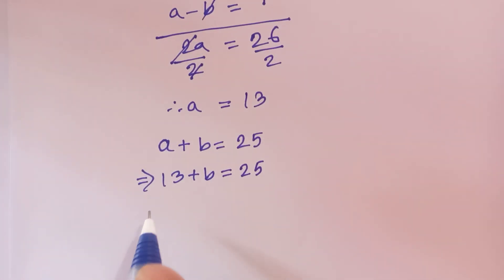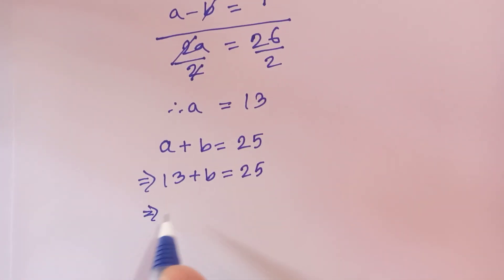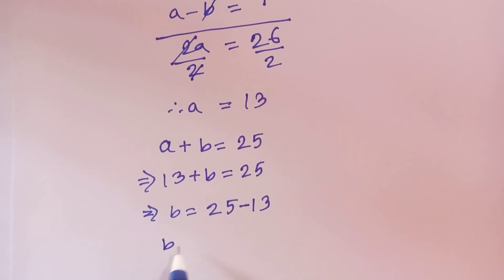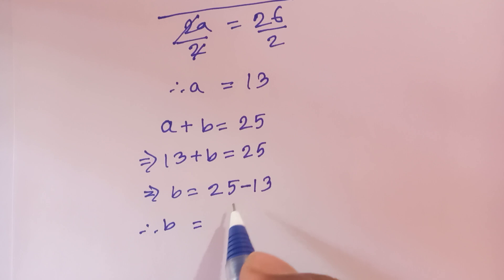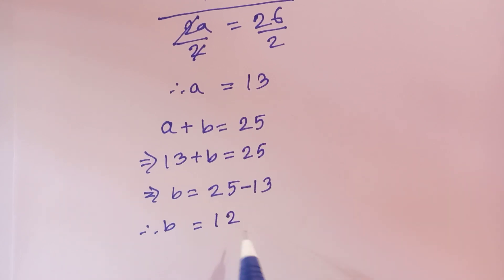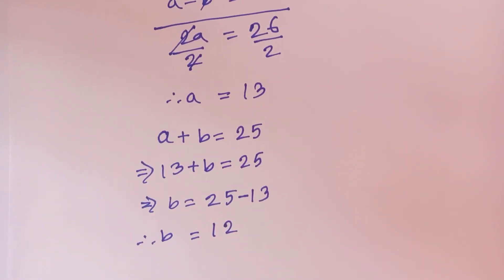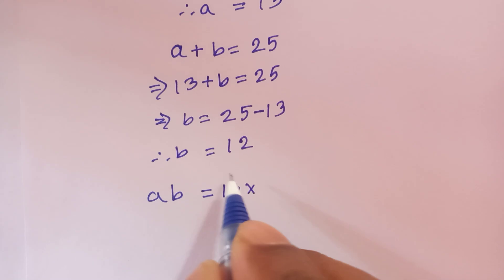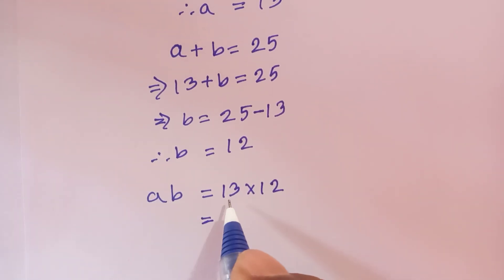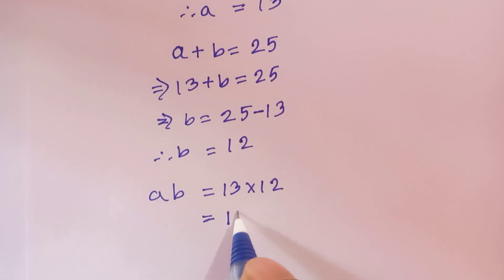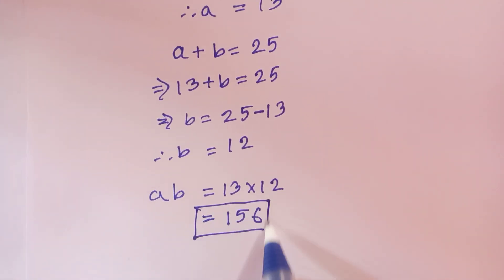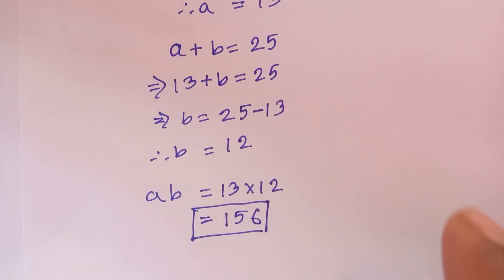Substituting a equals 13 into the first equation, a plus b equals 25, we get 13 plus b equals 25, so b equals 12. Therefore AB equals a times b equals 13 times 12, which is 156. So AB equals 156.